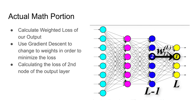So now we're going to go into the math portion. Basically, what we're trying to do is calculate the weighted loss of our output, then use gradient descent to change the weights in order to minimize the loss. For this specific video, we're going to show the calculation for one particular node. But depending on the complexity of your neural network, you would have to repeat this process for all of the nodes in the output layer.